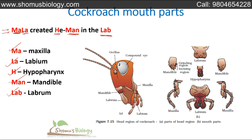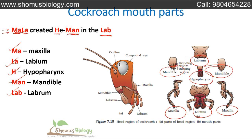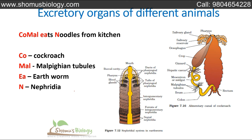Starting from maxilla — there are two maxillae — then one labium, one hypopharynx, two mandibles, and one labrum. So there are five types of components totaling seven individual parts in the cockroach mouth. Remember: 'Mala created he-man in the lab.'